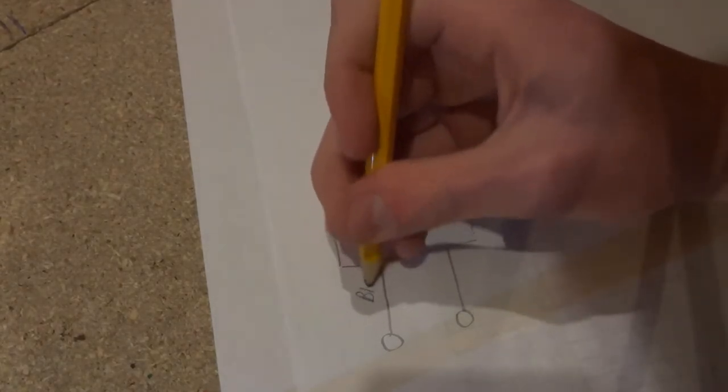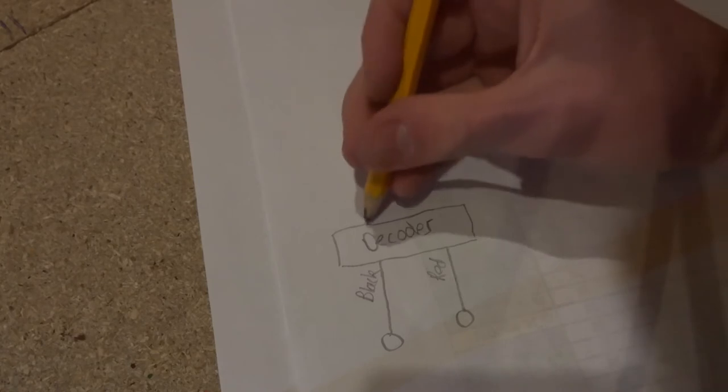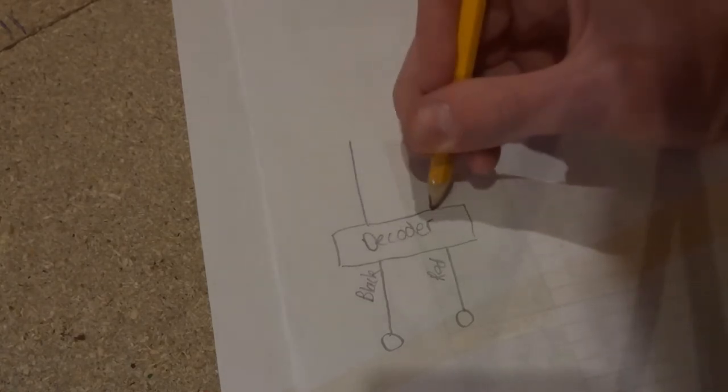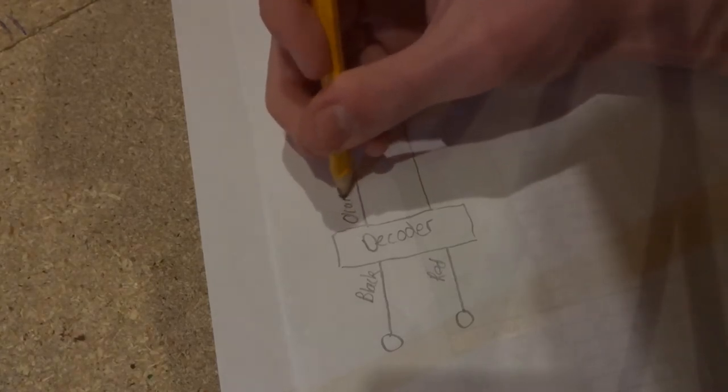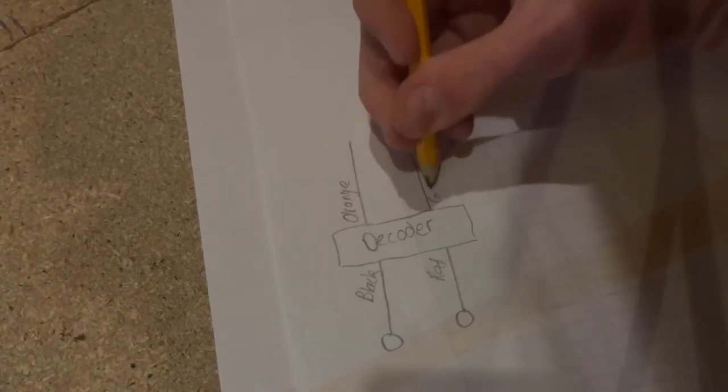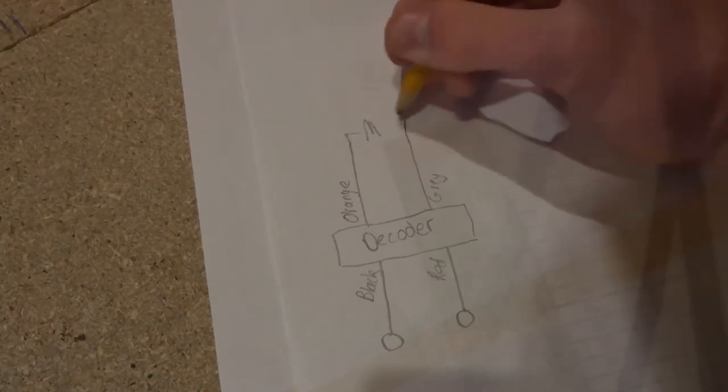The wires coming out of the decoder are color coded so you know where each wire goes. For example, track left is black and track right is red. So those are your black and red wires from the decoder. When wiring this up, you will definitely want to use decoder wires. If you use any other wires, they'll be thick and they'll plug up all the wiring in your train.